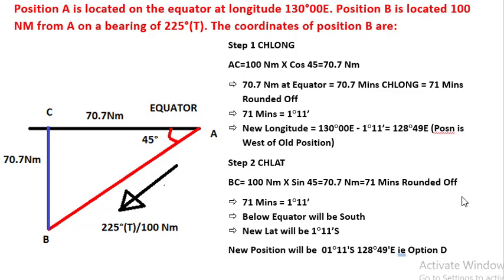Step one: find the change in longitude. AC equals 100 nautical miles into cos 45, which is 70.7 nautical miles, approximately 71 minutes, equal to 1 degree 11 minutes. So 130 degrees east minus 1 degree 11 minutes gives 128 degrees 49 minutes east. Step two: find the change in latitude. 100 nautical miles into sine 45 gives 70.7 nautical miles, approximately 71 minutes, equal to 1 degree 11 minutes below the equator — that is south. So the new position is 1 degree 11 minutes south and 128 degrees 49 minutes east, which is option D.